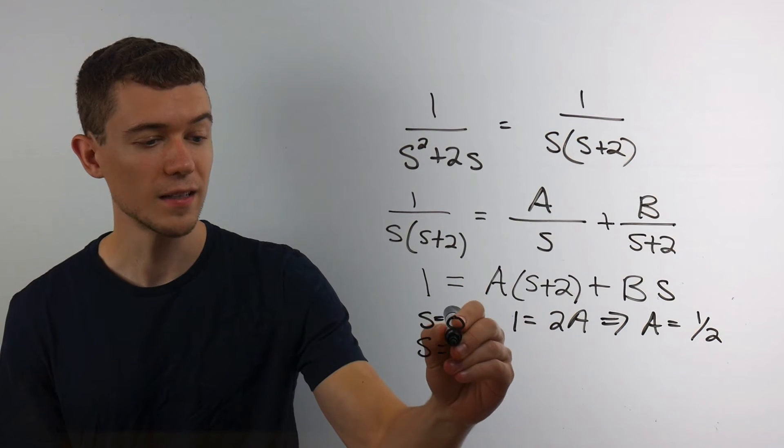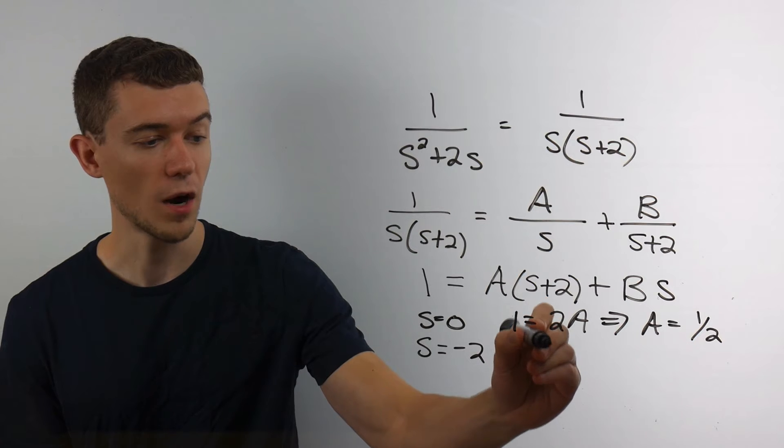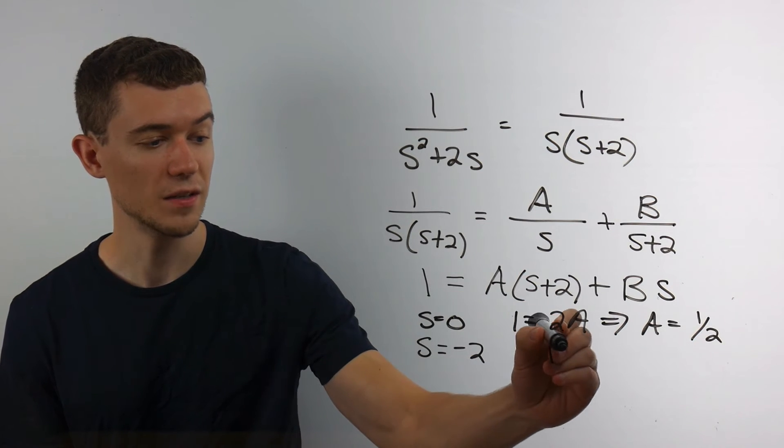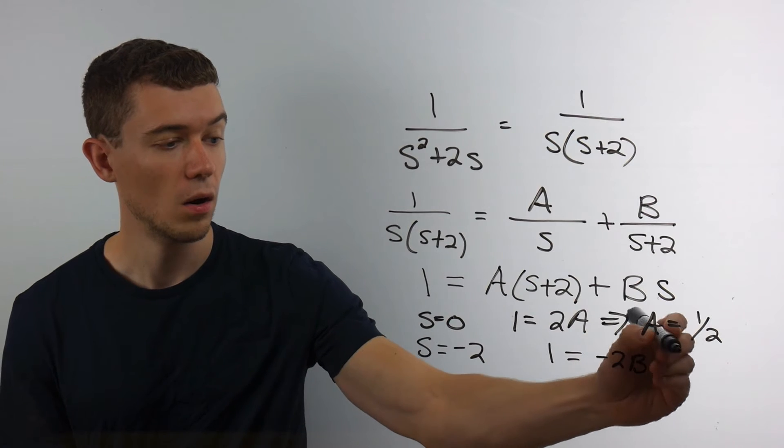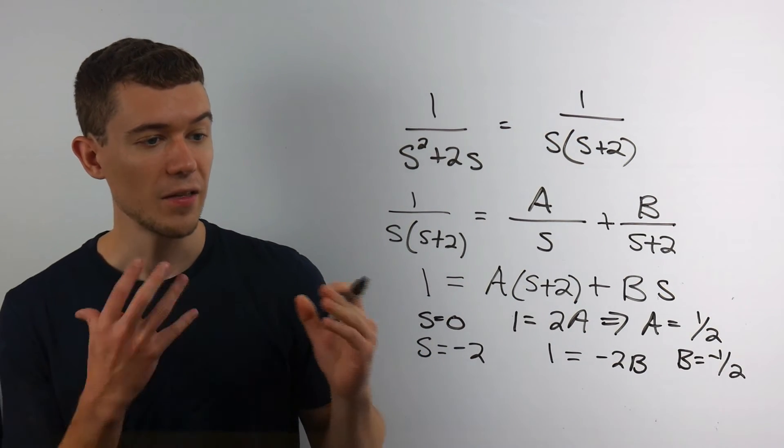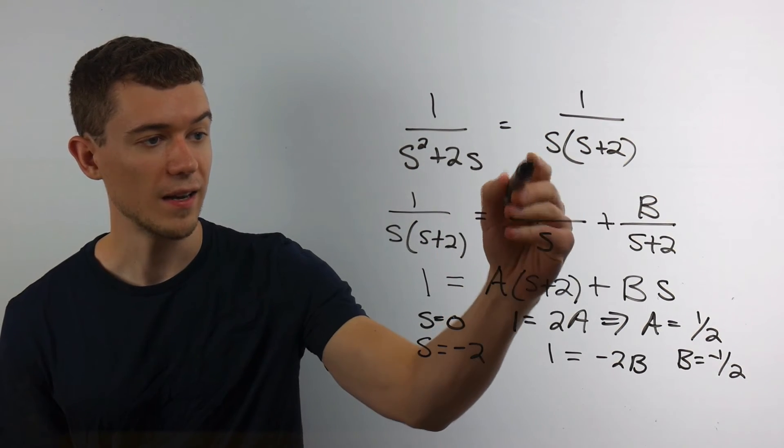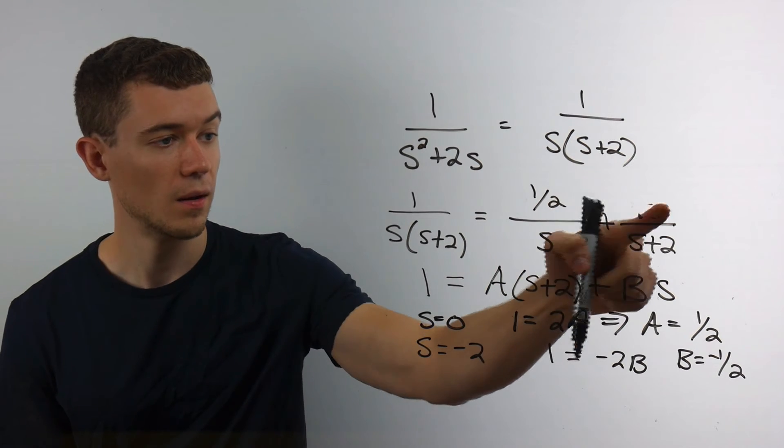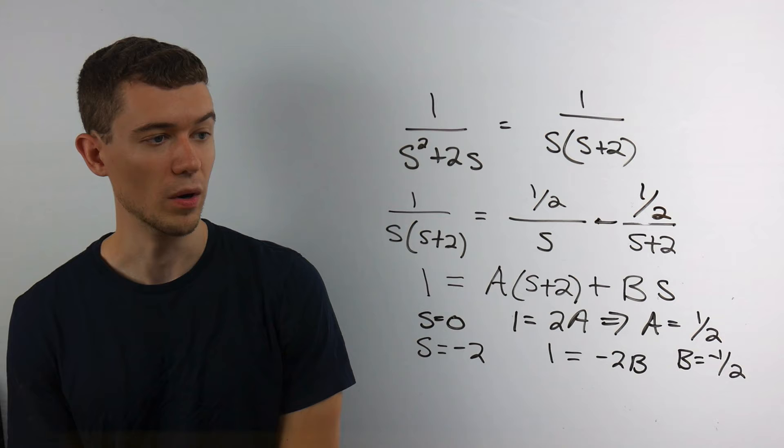Likewise, if I'm clever, I can substitute s to be negative 2. That would make the a term drop out. I'd get 2 minus 2 to go to 0. I'd have 1 equals negative 2b, or getting that b is negative 1 half. Now that I have a and b, I can plug them in right here. I know that a is going to be 1 half. I'll make this plus or minus, and b is also 1 half.